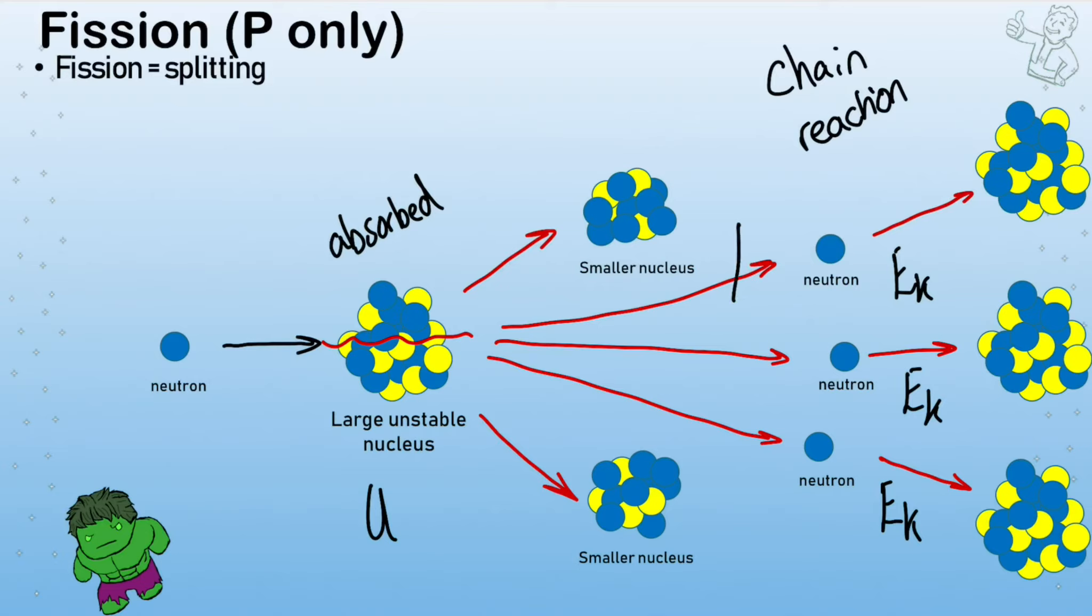And what we do is we put in a carbon rod in nuclear reactors and we can lower that down into the reaction chamber where these neutrons are then absorbed. And they won't then go on to collide with other unstable nuclei. And it will slow down the reaction. Eventually we can even stop the reaction.